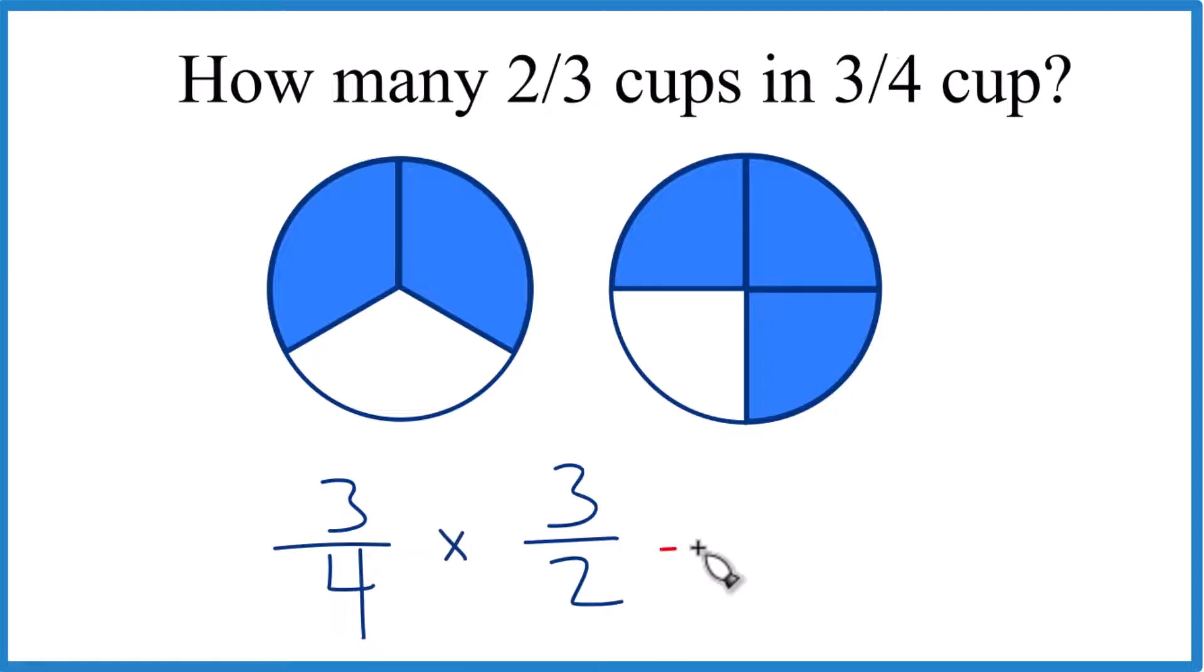Three times three, that equals nine. Four times two equals eight. So we get nine-eighths as our answer.